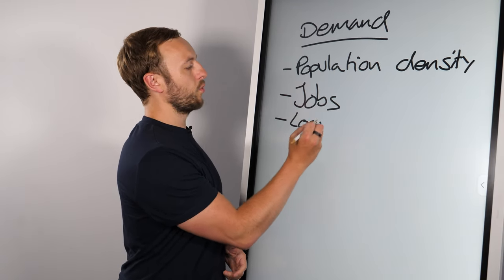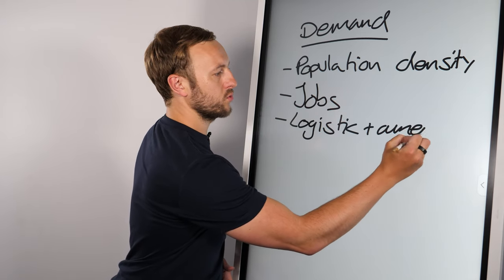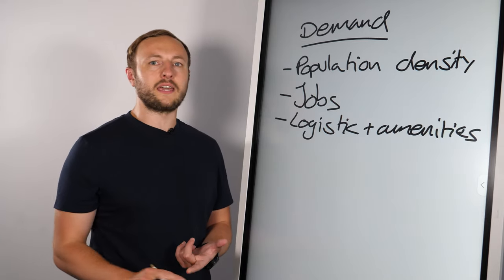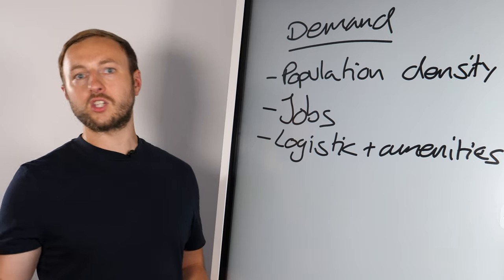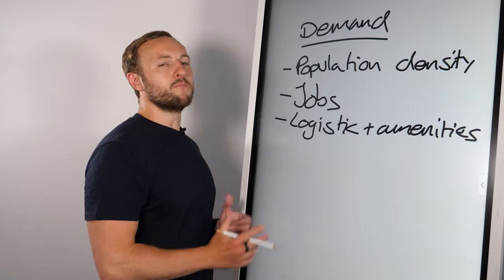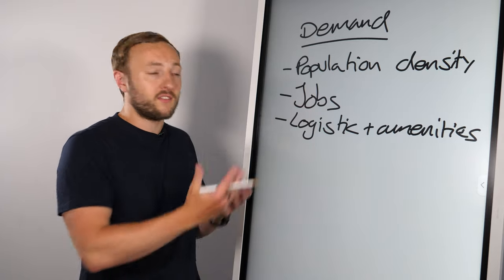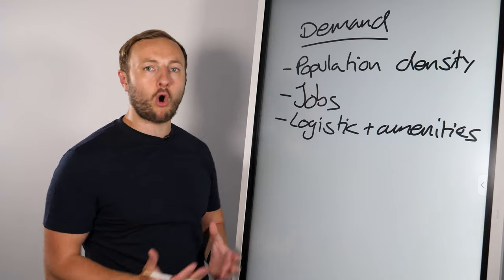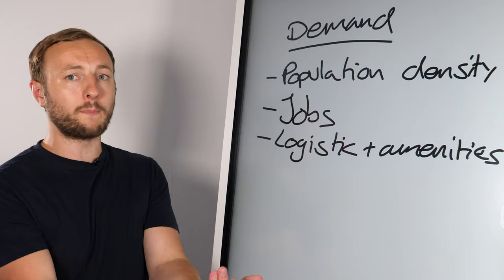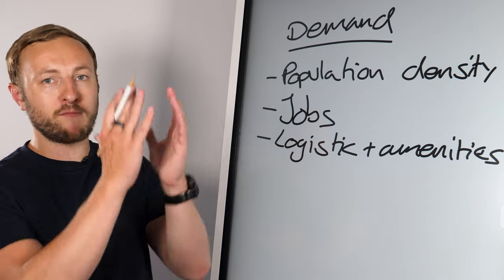The next thing is logistics, and what I mean by logistics is also amenities. So transport links, are there shopping centers, ice rinks, cinemas, and everything else that makes it a great area for people to live in. If there's more emotional reasons for people to live there, like the enjoyment factor of living in a location, that's also going to drive the demand or how many people want to live there, therefore increasing the competition per property. And that creates a bidding war situation, which drives property prices up.